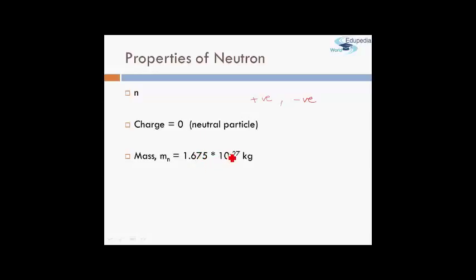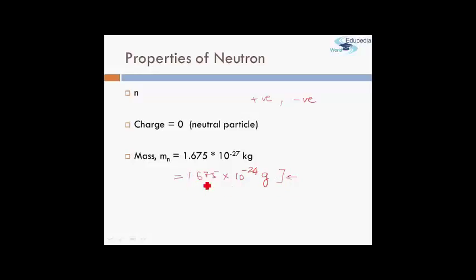The mass of a neutron is 1.675 × 10⁻²⁷ kilograms, or 1.675 × 10⁻²⁴ grams. You can see that this is approximately the same as the mass of a proton — the neutron is only very slightly higher in mass. For examination purposes, it's good to memorize 1.67 × 10⁻²⁴ grams or 1.67 × 10⁻²⁷ kilograms.